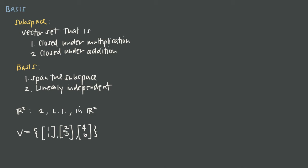That third vector is already a linear combination of the first two vectors — specifically, 0 times the first vector plus 2 times the second vector. Similarly, if instead we had the vector [3,4], that is simply the sum of the first two vectors: 1+2=3 and 1+3=4. So [3,4] is a linear combination of 1 times the first plus 1 times the second vector, making the set linearly dependent. Any linearly dependent set cannot form a basis for the subspace.